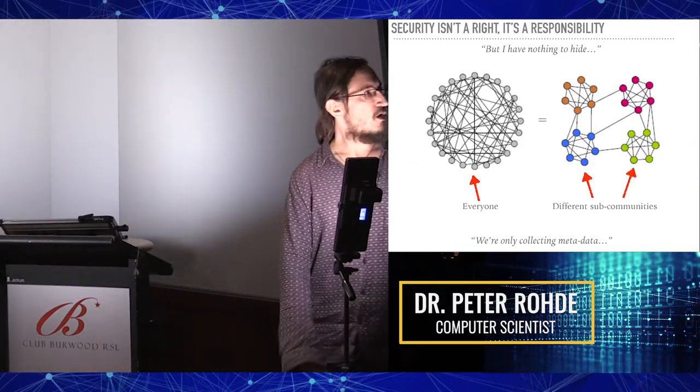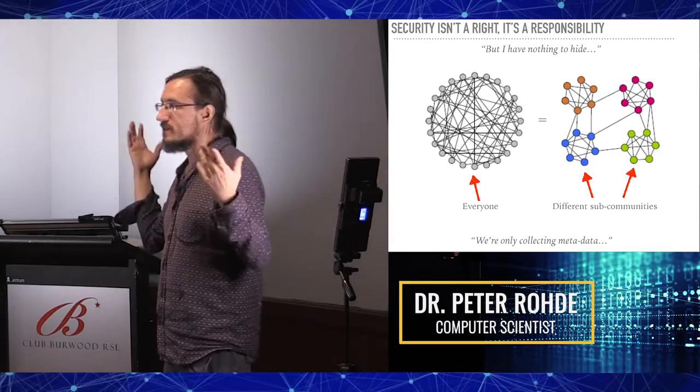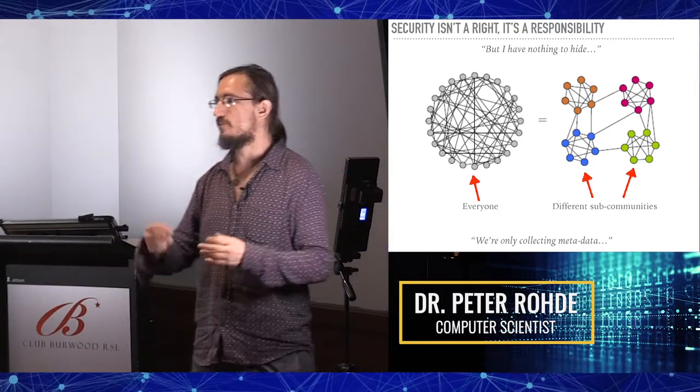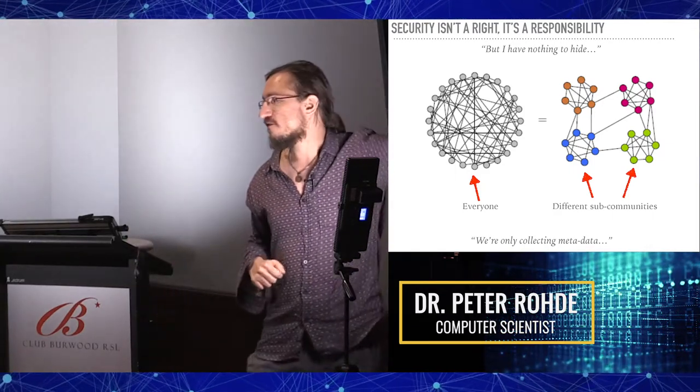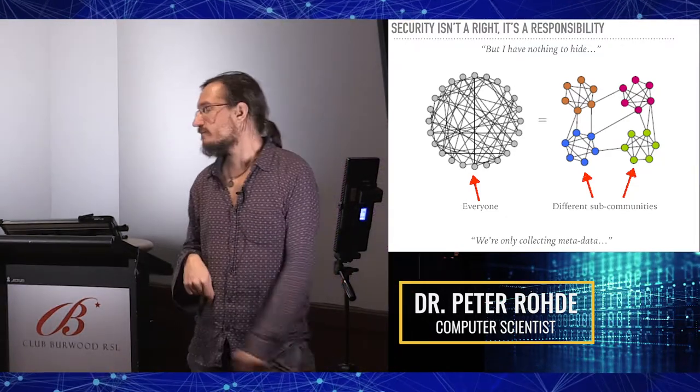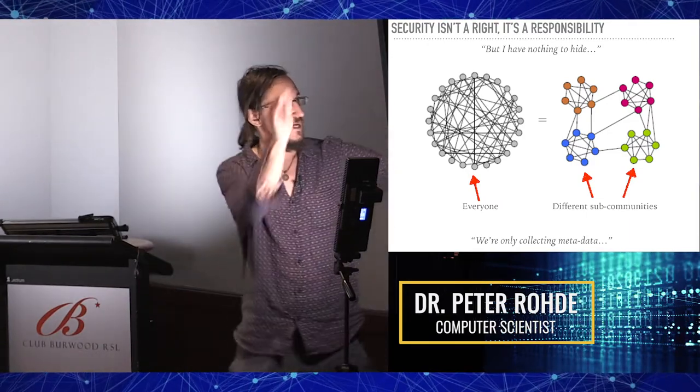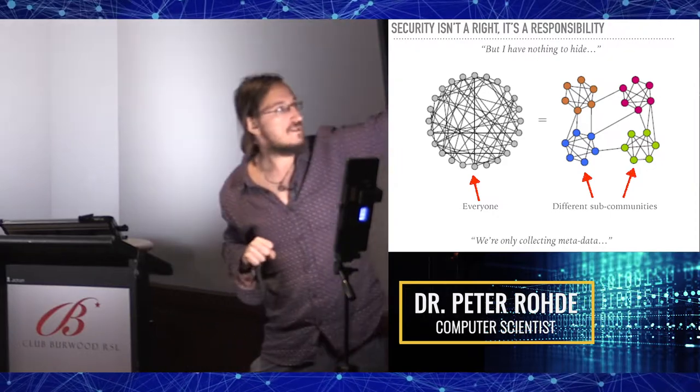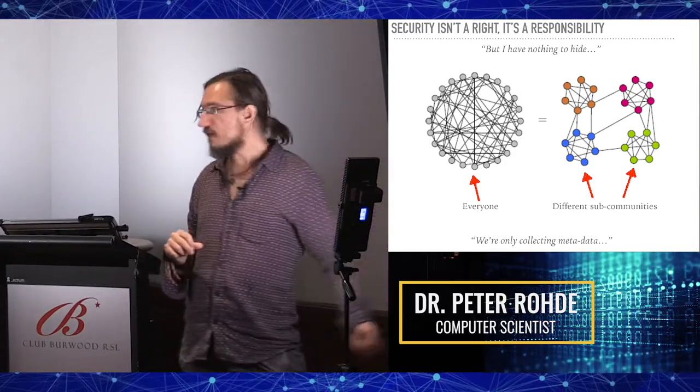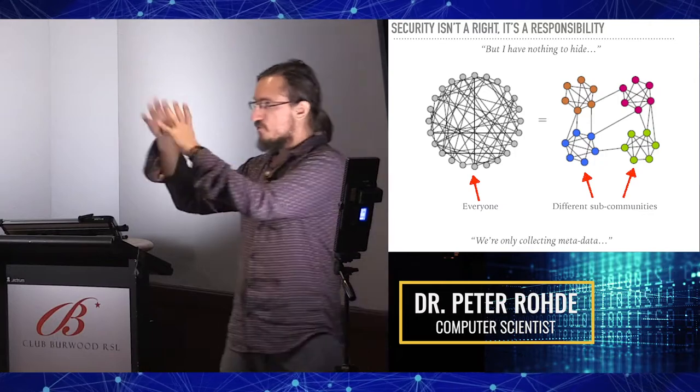Here's an example of what mathematicians call a graph on the left. The little nodes, called vertices, represent individuals. The edges between them represent some kind of connection - it could be an interpersonal relationship or a business relationship or a workplace relationship. You can build these graphs for every type of relationship that you can conceivably imagine.